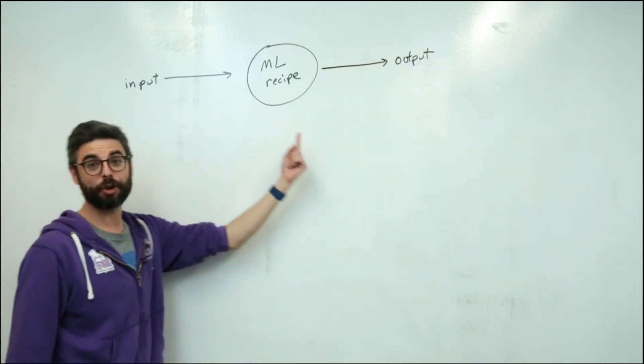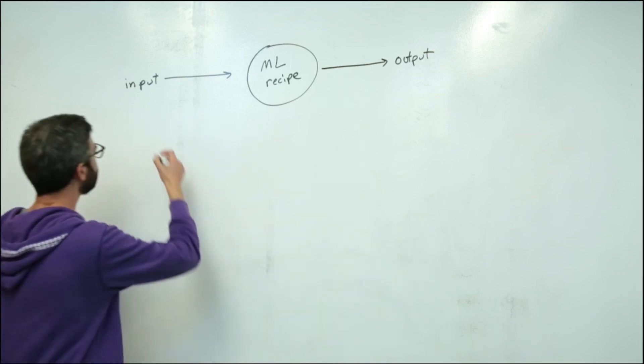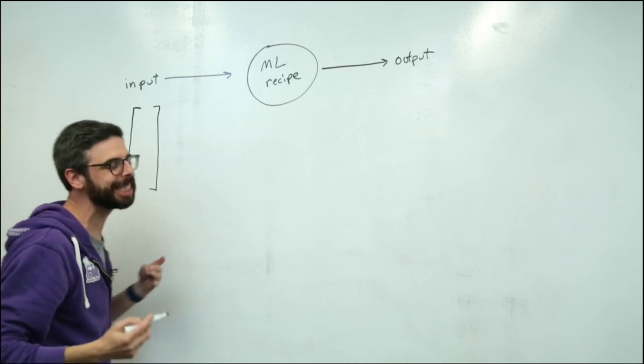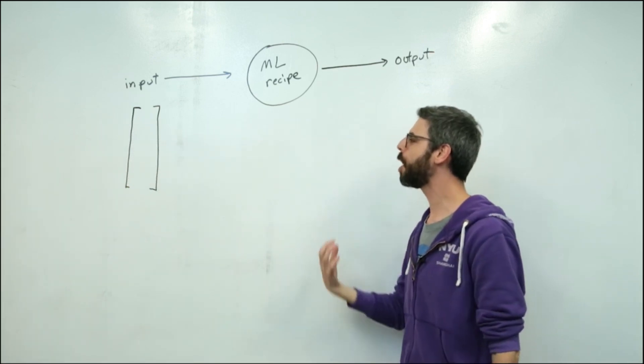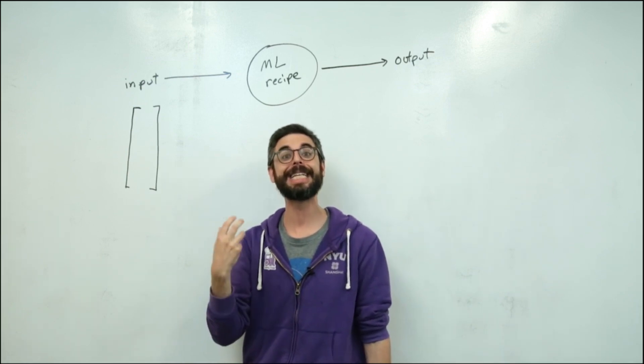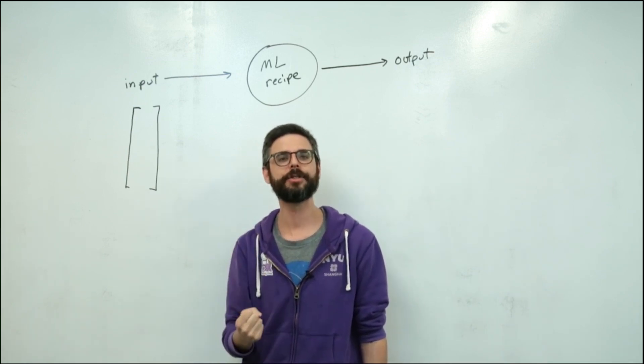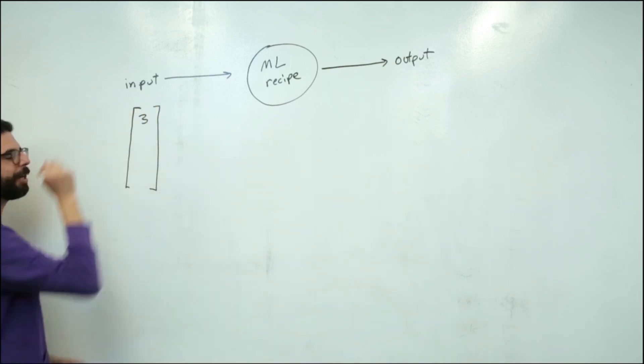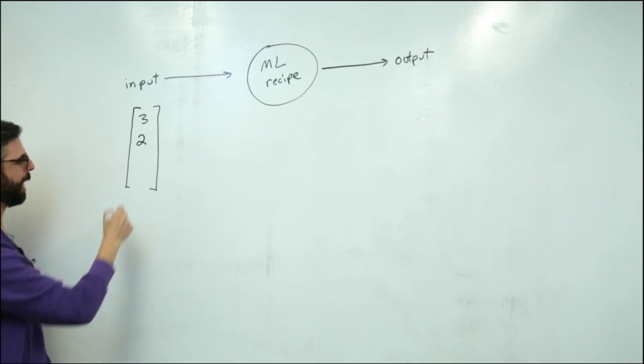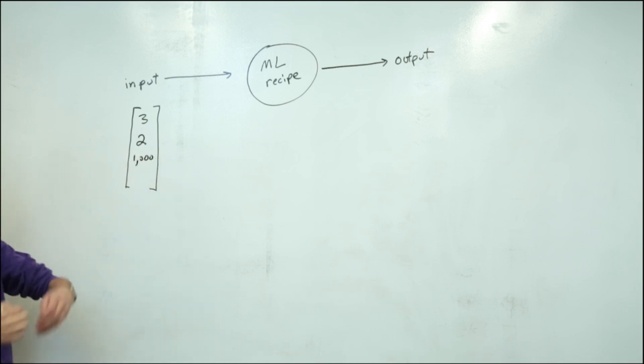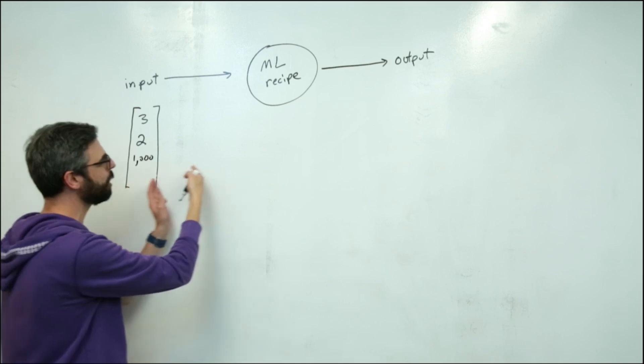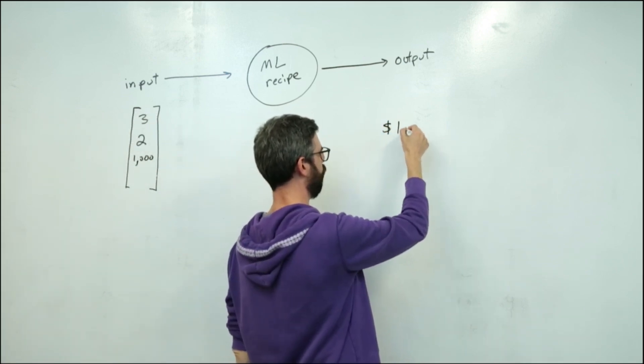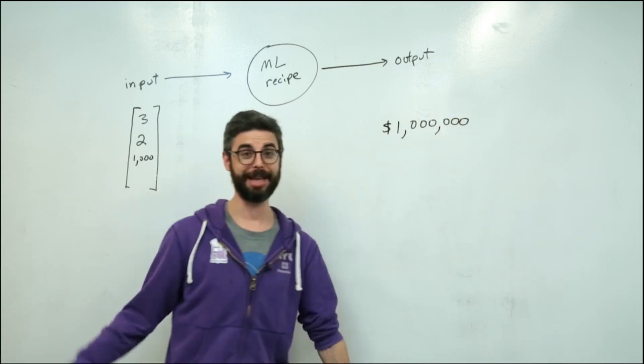The input into the machine learning recipe is typically numeric. So you could think of it as a classic example that's always given is, what if we want to build a machine learning system that can guess the price of a house based on some inputs? So maybe we might say the house has three bedrooms, and it has two bathrooms, and it has 1,000 square feet, and et cetera. This is the input into the machine learning recipe, and the output might come. The house is $1 million. Nice house, apparently.